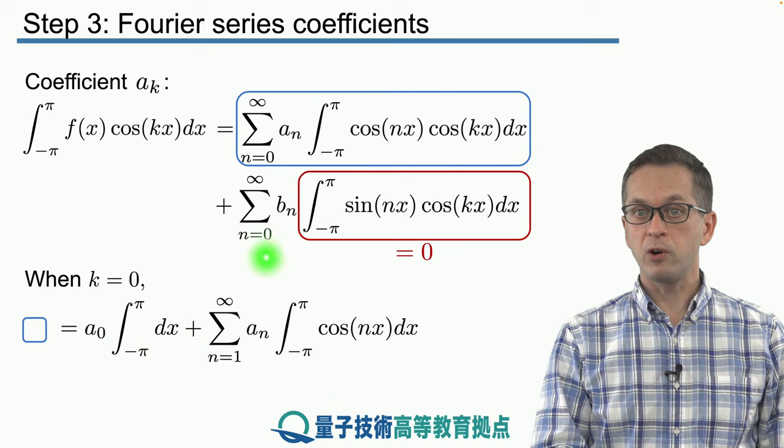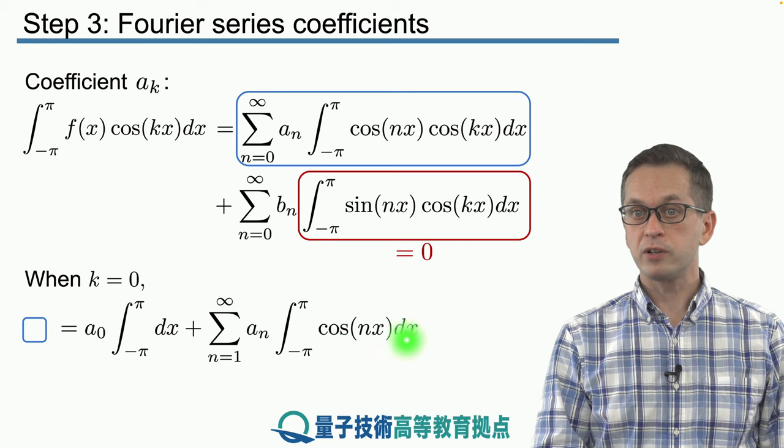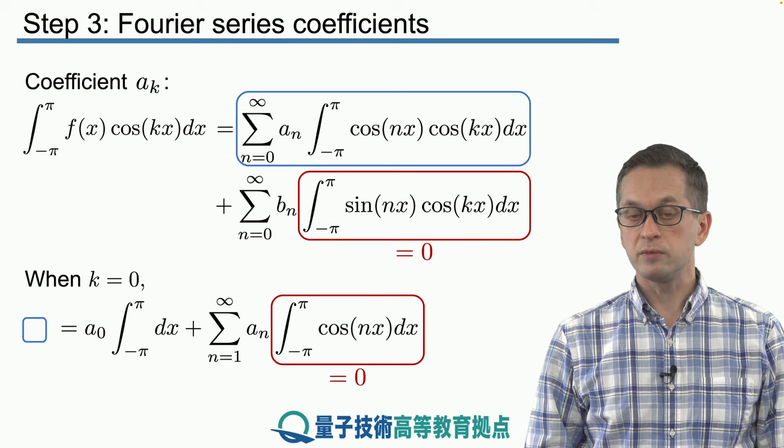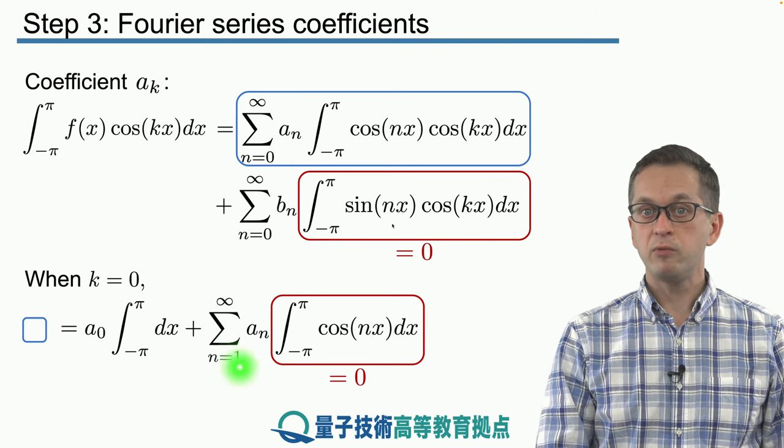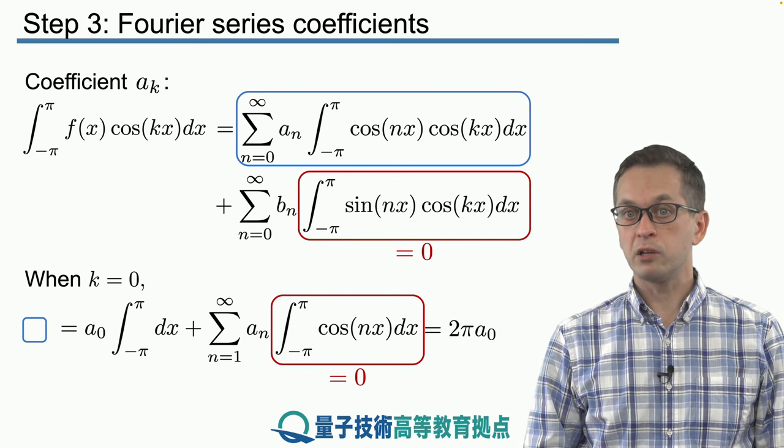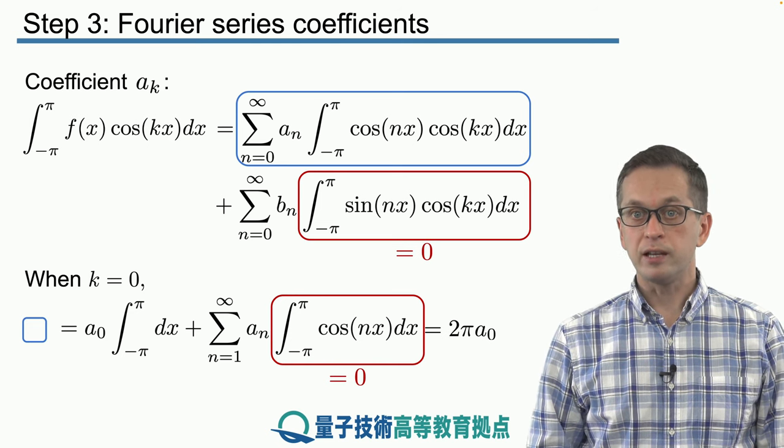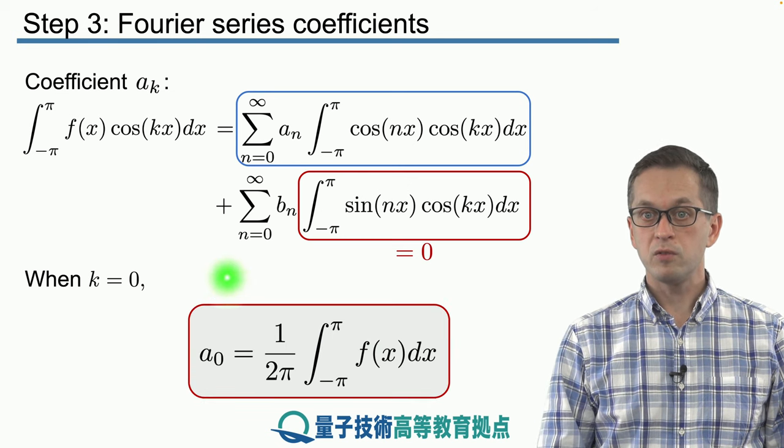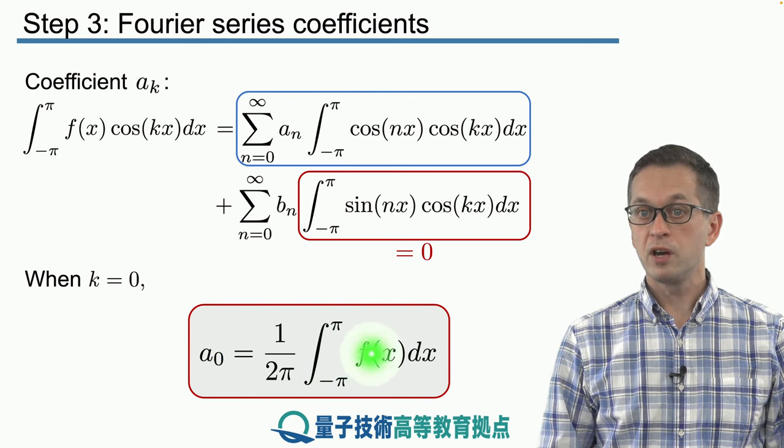And then we've got the following sum for the remaining n terms, n equals 1 up to infinity of the following function. Again, this can be evaluated very easily and that's just 0. So all we are left with is this first integral and we know that that's just 2 pi. Therefore, the whole integral inside the blue box is equal to 2 pi times a_0. And look at that, we determined the first coefficient a_0. So we have got our first formula. a_0 is equal to 1 over 2 pi times the integral over the period of the function itself.